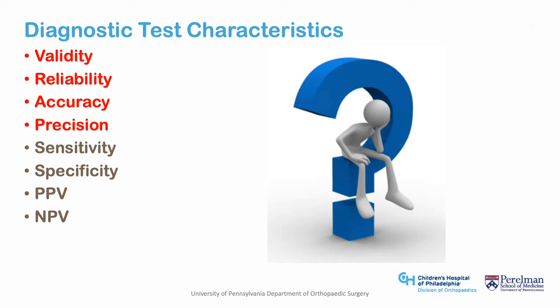Integral to the practice of medicine is using diagnostic tests. Similarly, in research methodology, it is important to understand characteristics of a test that make it more or less useful for your purposes. Collectively, these qualities are known as operating characteristics of tests, and typically include sensitivity, specificity, and positive and negative predictive value.